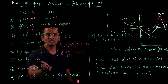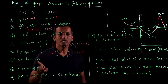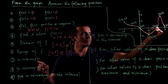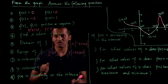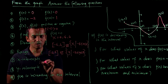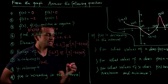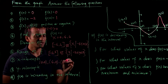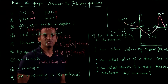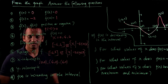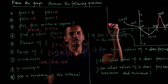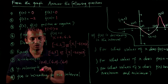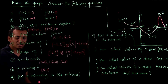What are the x-intercepts? The x-intercepts are the points where the graph crosses or touches the x-axis. There are three x-intercepts: (0, 0), (4, 0), and (6, 0). How about the y-intercept? The curve meets the y-axis at only one point, which is (0, 0).